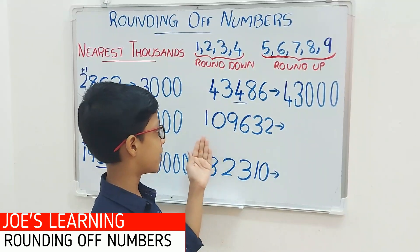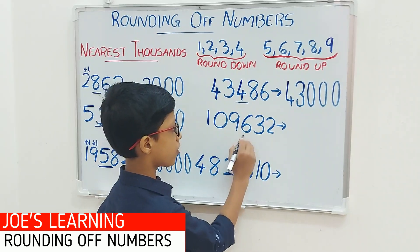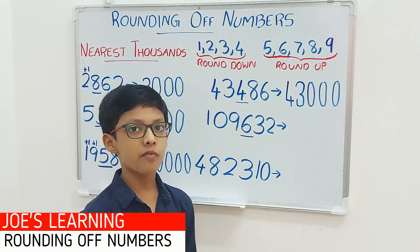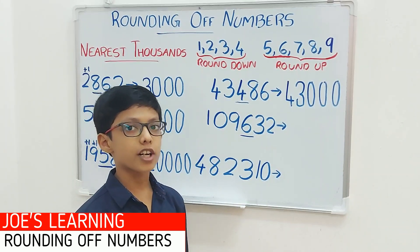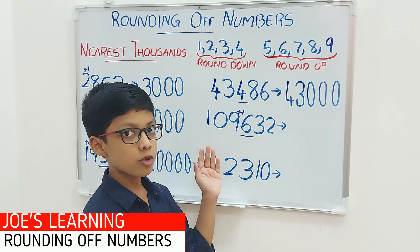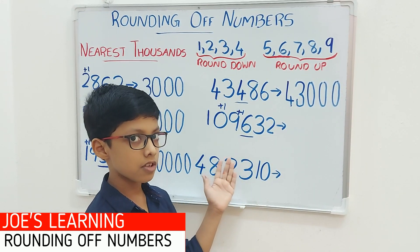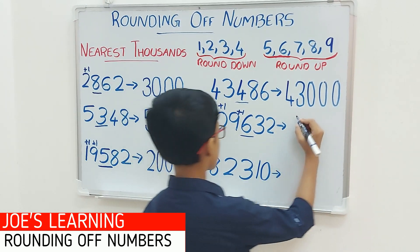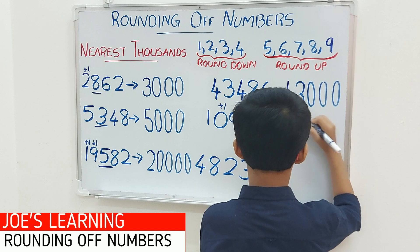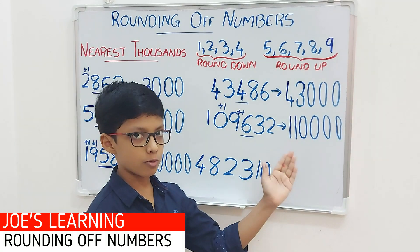Now let's move on to this example, that is 1,96,32. For this example, we have to look at the digit in the hundreds space — 6 is in the hundreds space. We compare it with 5: 6 is greater than 5. So we have to put a 0 in the ones, tens and hundreds space and add 1 to the digit in the thousands space. 9 plus 1 is 10, so we carry over another 1 to the ten-thousands space — 0 plus 1 equals 1. So 1,96,32 rounded off to the nearest thousands equals 1,10,000.